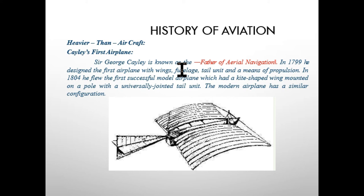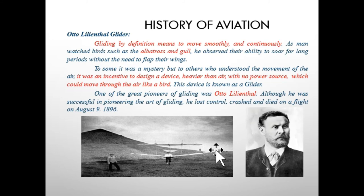Sir George Cayley designed an aircraft shape featuring an aerofoil-shaped wing, a fuselage, and a tail unit joined to the fuselage. This type of configuration is still majorly used in current conventional aircraft scenarios.